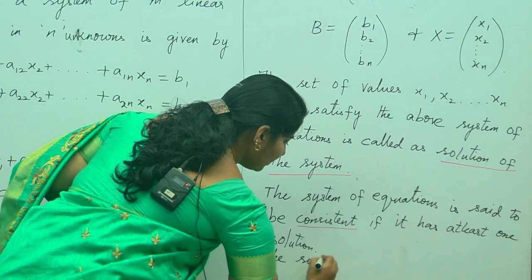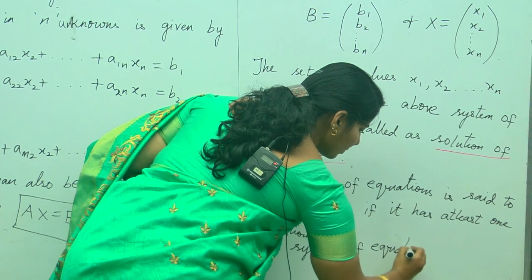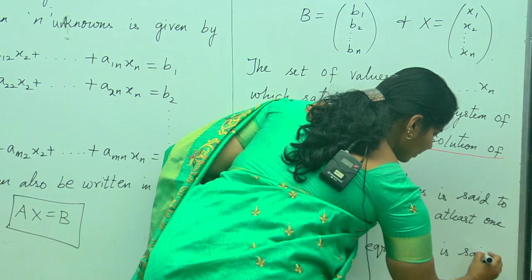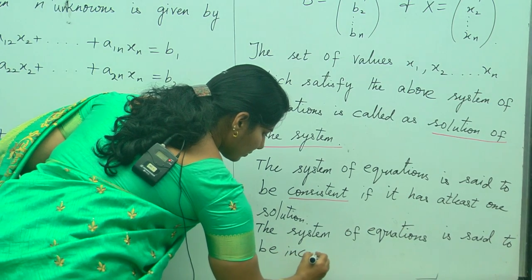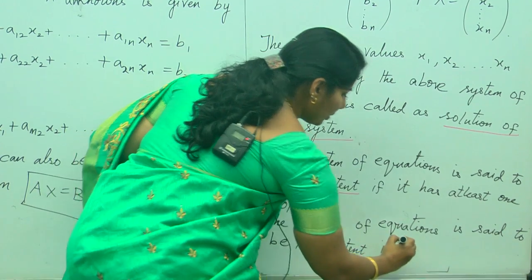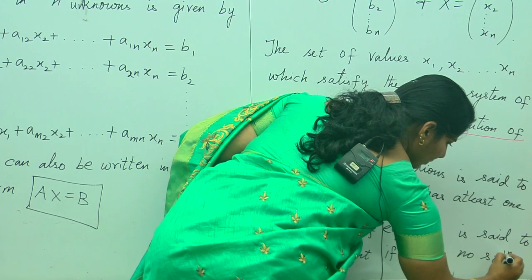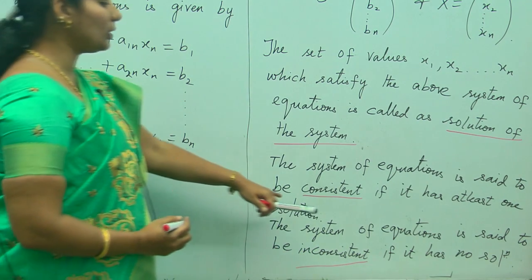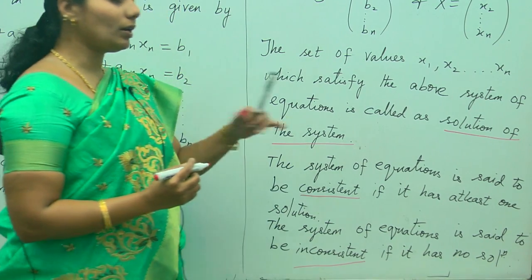The system of equations is said to be inconsistent if it has no solution. So, if you have got at least one solution, you will say that the system of linear equations is consistent. When it is inconsistent, it should not have any solution value at all.